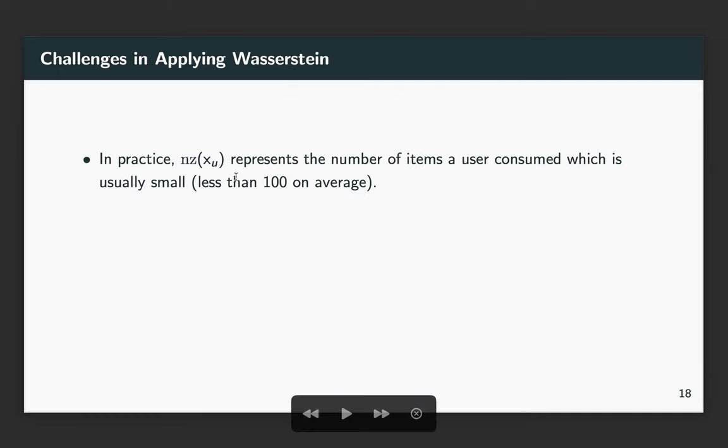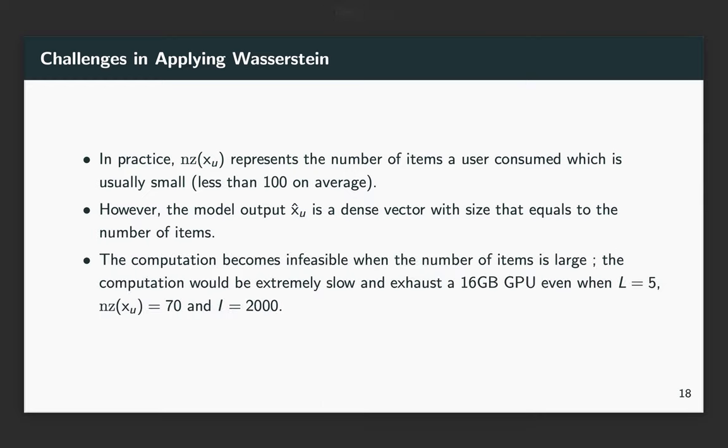In practice, nz_{x_u} is small because x_u is a sparse vector. However, the model output x_u-hat is a dense vector. The computation will become infeasible even when the number of items equals 2,000, and it can exhaust a 60-gigabyte GPU memory.